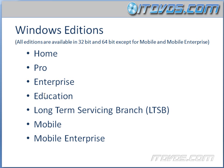Home, Pro, Enterprise, Education, and LTSB all come in 32-bit and 64-bit versions. For the most part, we're going to be working with Pro or Enterprise. Education is going to be very similar to Enterprise, except it's really designed for educational institutions and is only available through academic volume licensing. The Long-Term Servicing Branch we'll talk about more in a bit — it's another special version of Windows 10. The Home version is more for the home user, and Mobile and Mobile Enterprise are really only for phones or very small tablets capable of making phone calls.